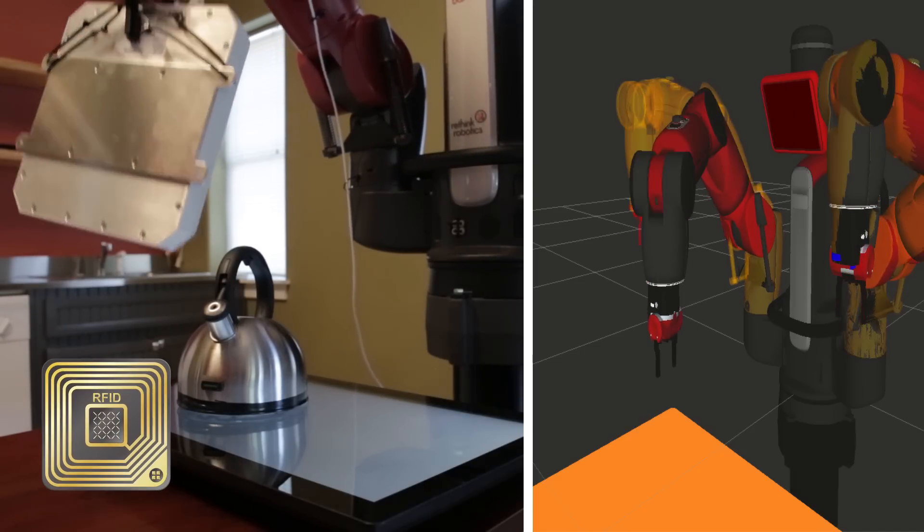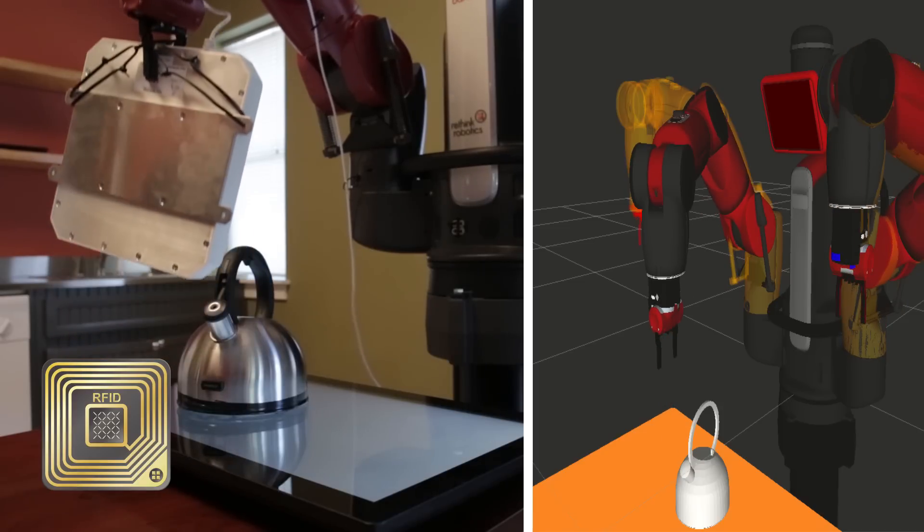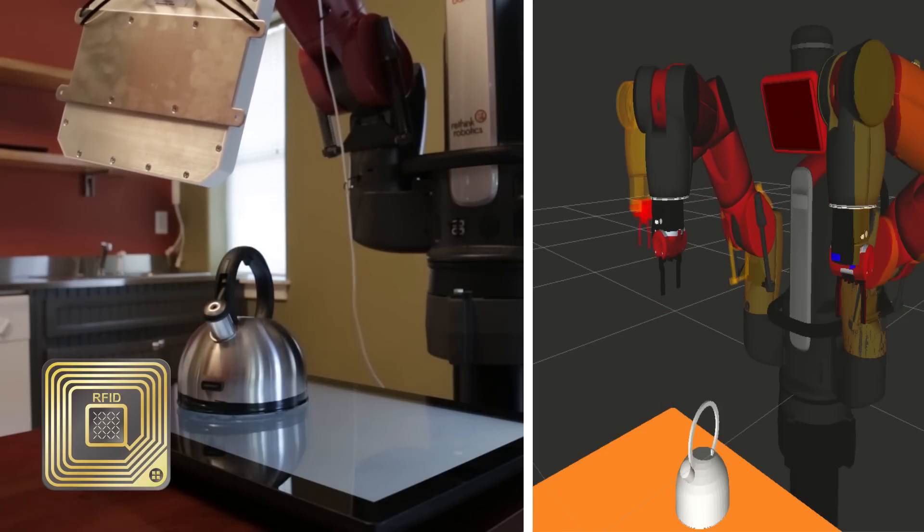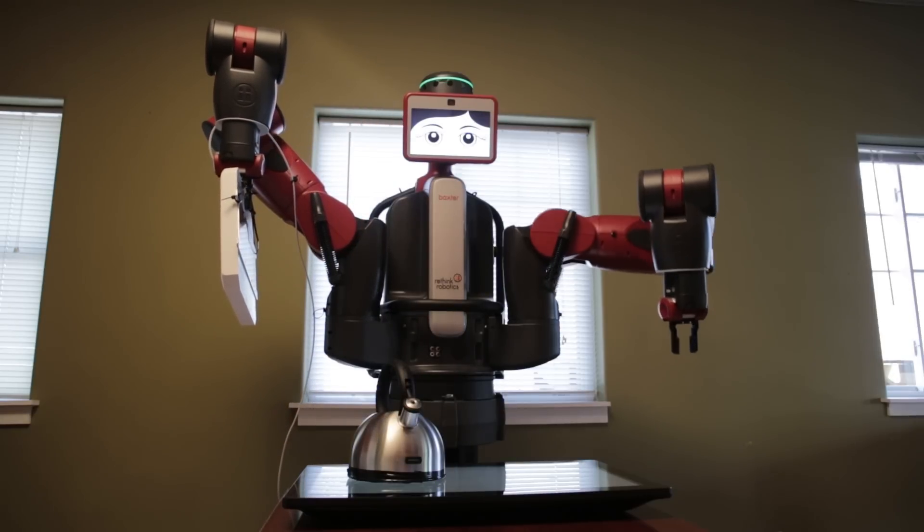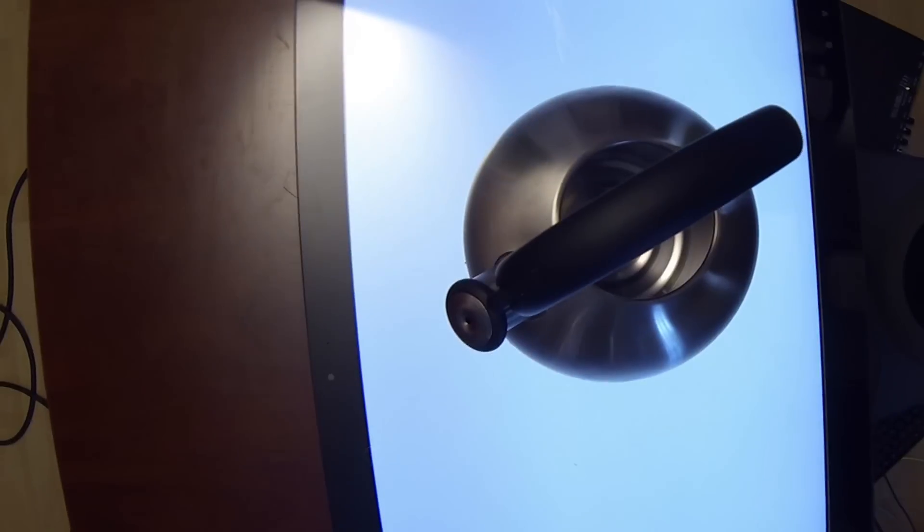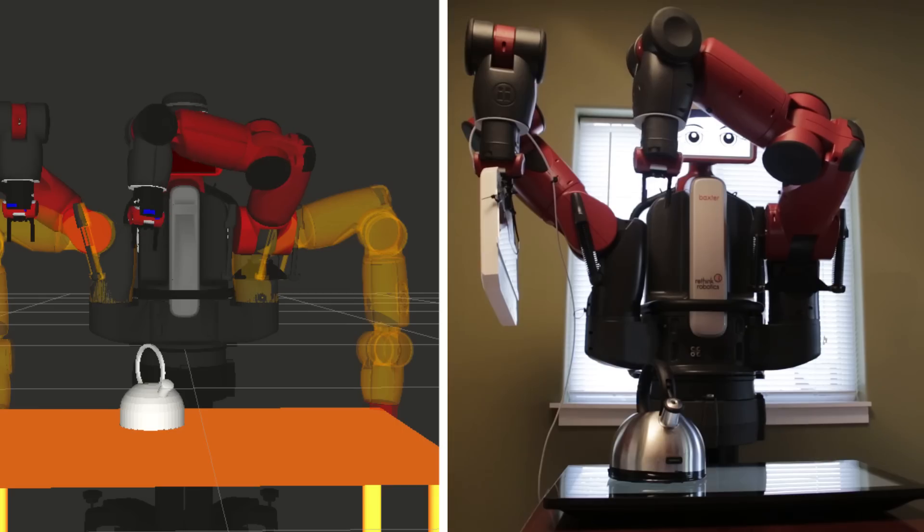The RFID tag allows Liatris to identify the object. A CAD model for an object can be created using Liatris' decentralized global API. Any manufacturer can introduce new objects at any time. Liatris' API also gives the robot instructions on which position would be optimal in order to grasp an object.